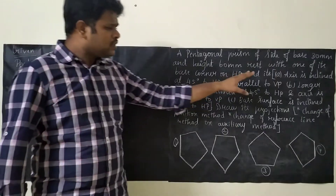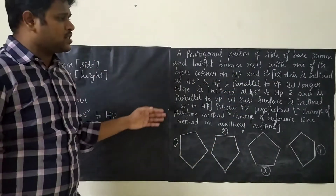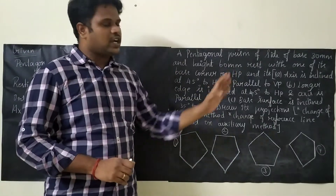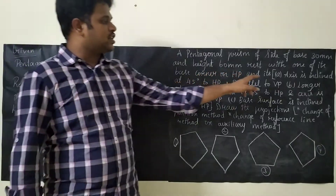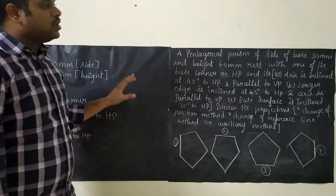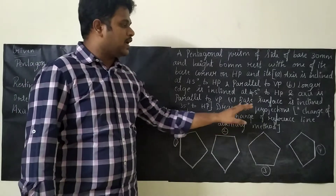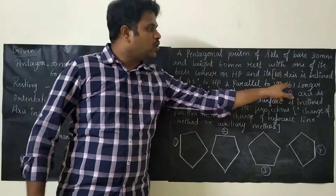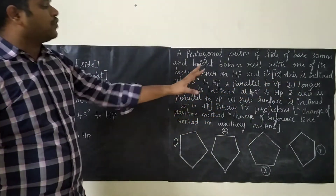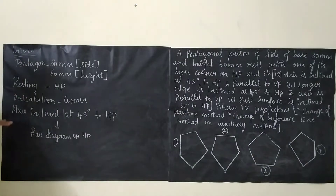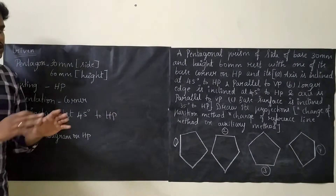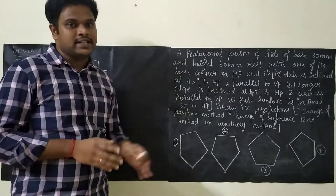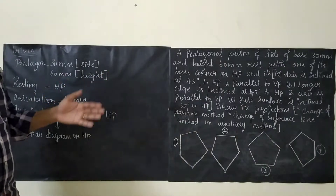There are three conditions. In your examinations, they won't ask you to draw all three conditions — they will ask any one condition, and each condition is 20 marks. I will be explaining condition A by drawing the diagram. For B and C, I will be explaining how to differentiate. In condition A, they are asking: axis is inclined at 45 degrees to HP. Refer to the introduction video and playlist for hints before proceeding.